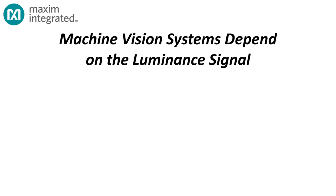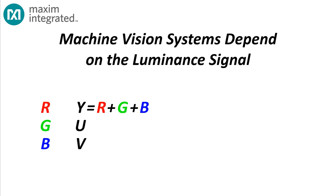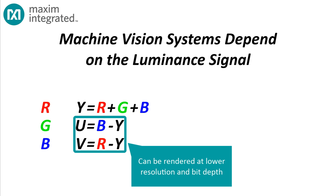And in that regard, modern image signal processors are a lot like the visual cortex — they primarily depend on the luminance signal to perform object detection and recognition. Modern machine vision systems might not render an image in RGB space at all; they may render an image in YUV space. Y is intensity, U is blue minus intensity, and V is red minus intensity. U and V may be rendered at lower resolution or lower bit depth than Y.